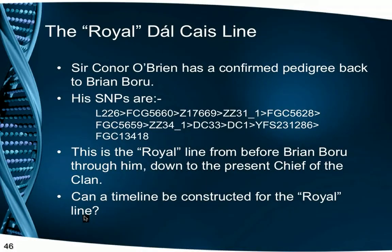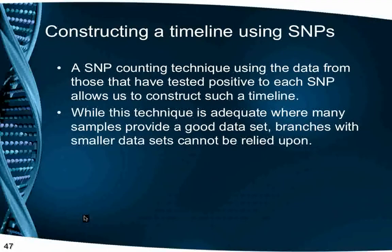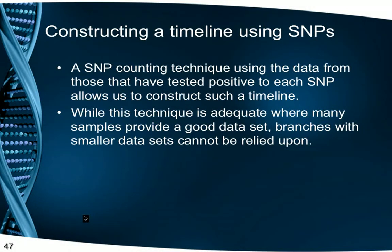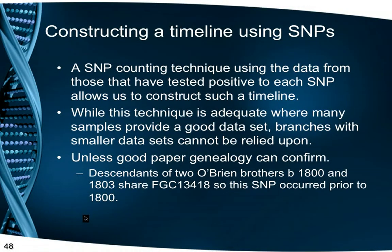The next question is, can a timeline be constructed for the Royal line? The SNP counting technique using data from those that have tested positive for each SNP allows us to construct such a timeline. This is so for larger data sets, but with branches with only two or three samples, age results are much less reliable, unless we have good paper genealogy which can confirm the position. Descendants of two O'Brien brothers, sons of Sir Edward O'Brien the 4th Baron Inchiquin, born 1800 and 1803, share a SNP FGC13418. So this SNP must have occurred prior to 1800, perhaps around 1780.